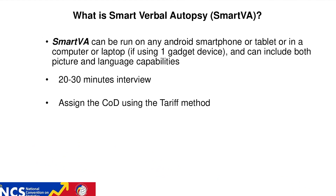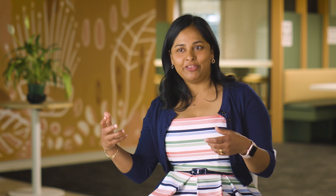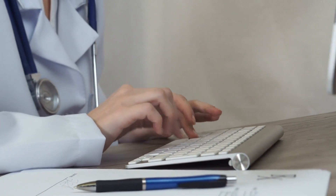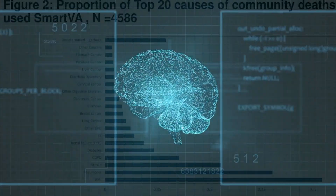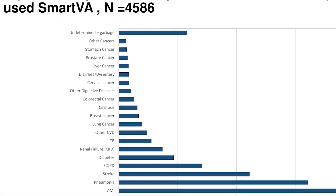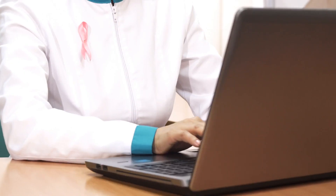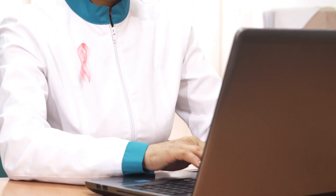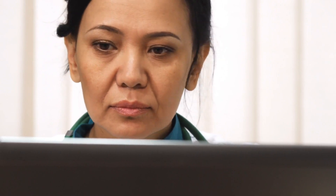It's a tool on an Android tablet or on a computer where the doctor can ask a series of questions in a standardized way. This information is then processed by an algorithm, which provides different causes of death and reasons for those particular causes. The doctor can then choose a particular cause of death, understand why Smart VA has recommended it, and use that information to certify a death certificate.